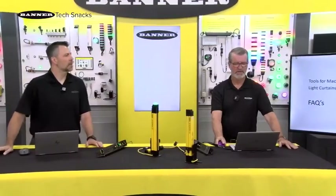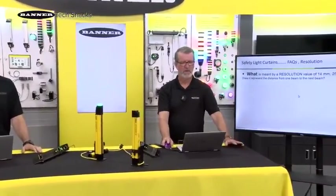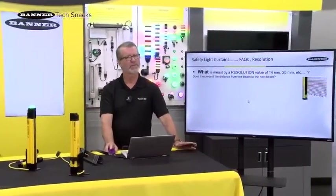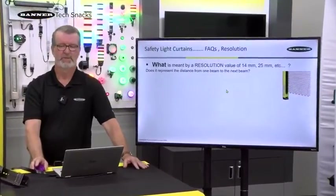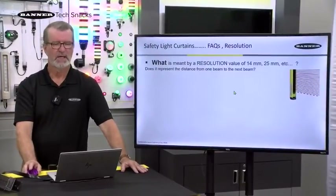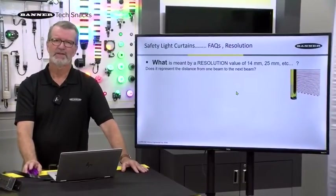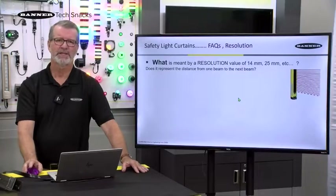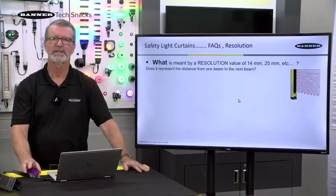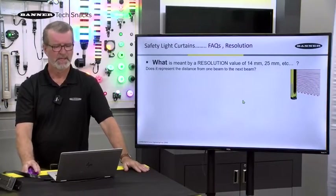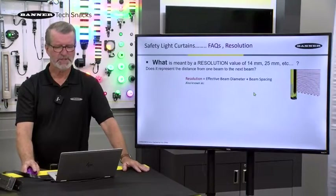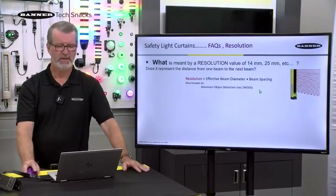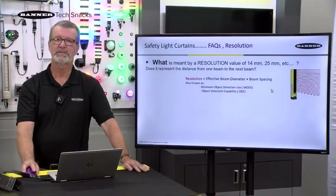Good. Thank you. I've got a few right here. One of them is an understanding of what resolution means. We hear terms of 14mm, 25mm, whatever. And the question comes up: is that the same thing as beam-to-beam spacing between beams? And the answer is no, it's a little bit more than that. Resolution is actually the effective beam diameter plus the beam spacing.